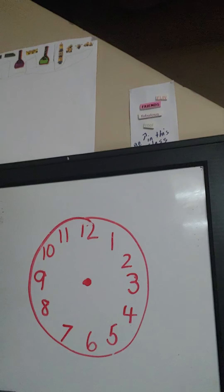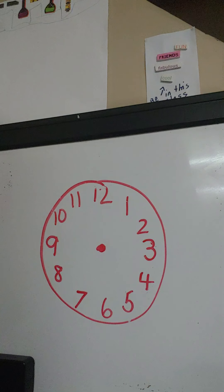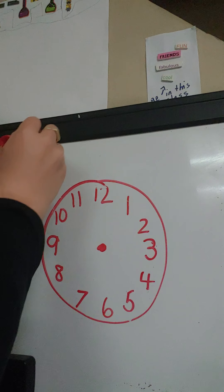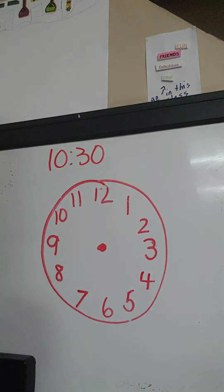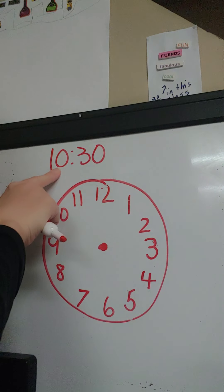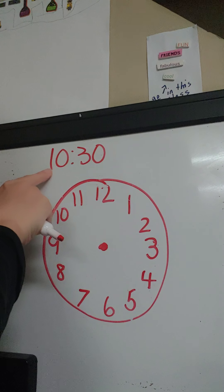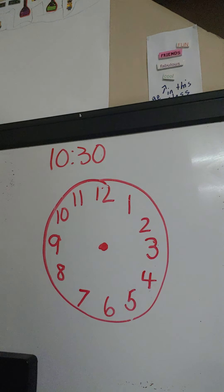I'm just going to move my camera a little bit so you can see my clock on my dry erase board. We're just going to do a couple practices from yesterday. I'm going to write the time 10:30 digitally on my dry erase board — the hour comes first, then two dots, and then the minutes come after. So now I need to draw this on my analog clock. The hour is always the short hand, so where am I going to put my short hand? It's 10:30.